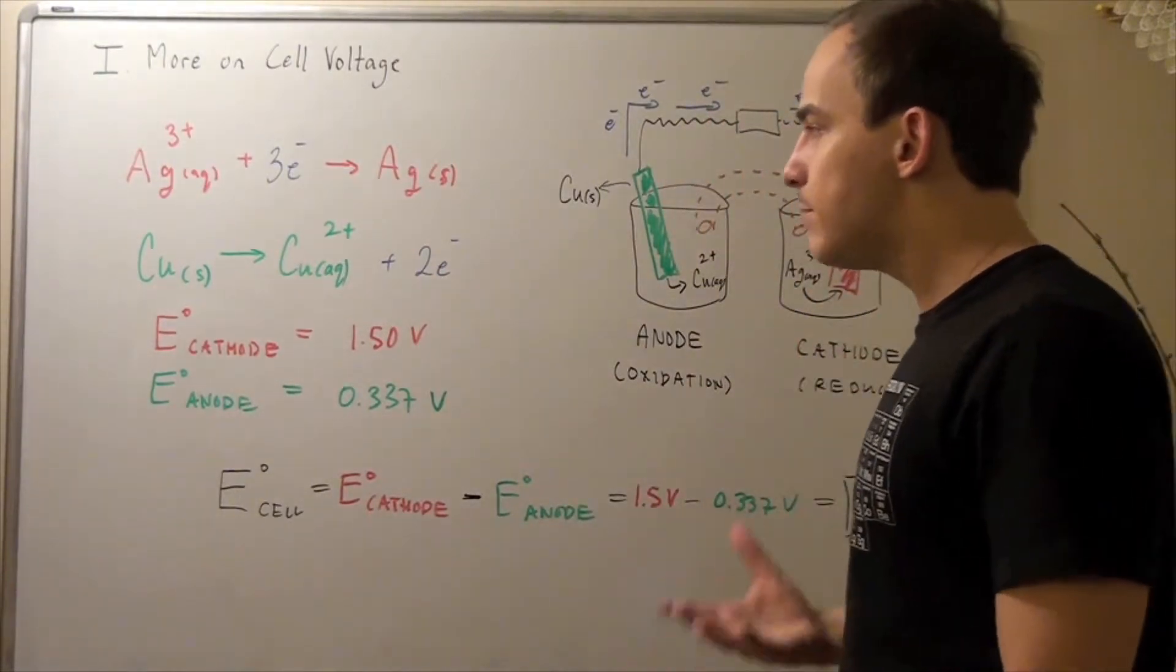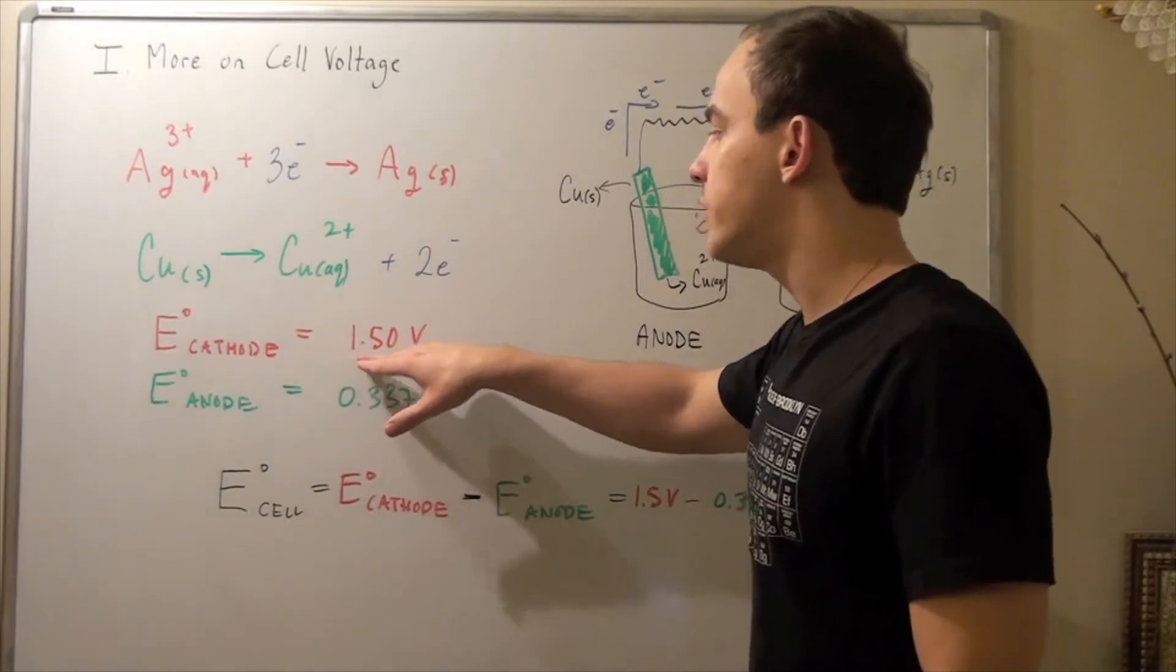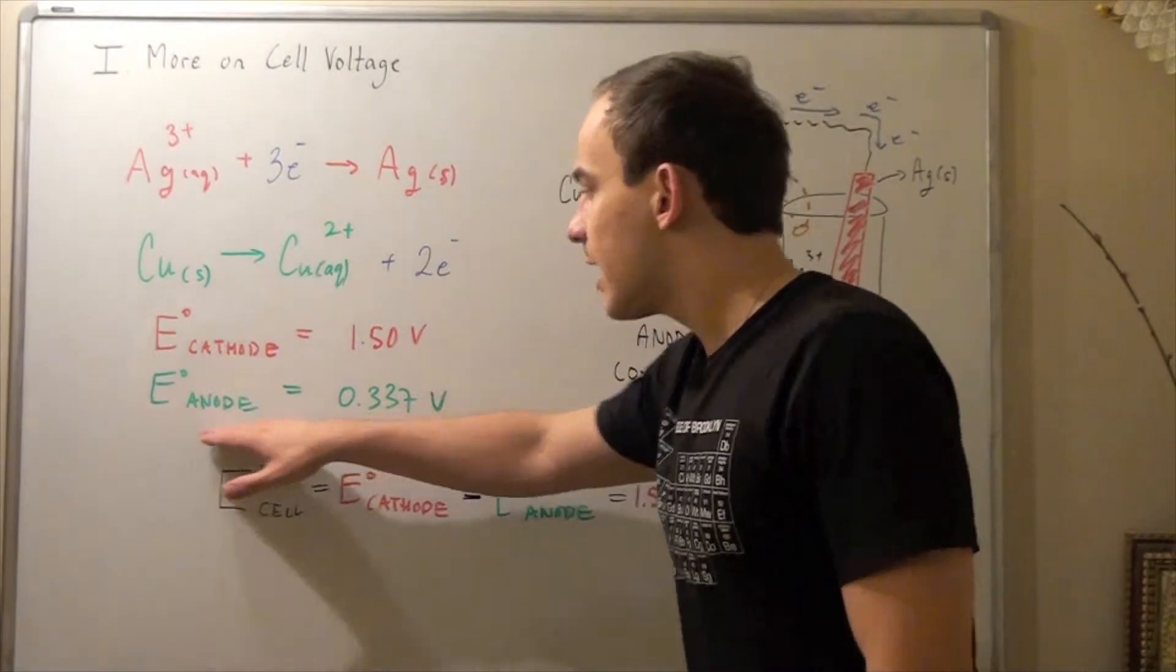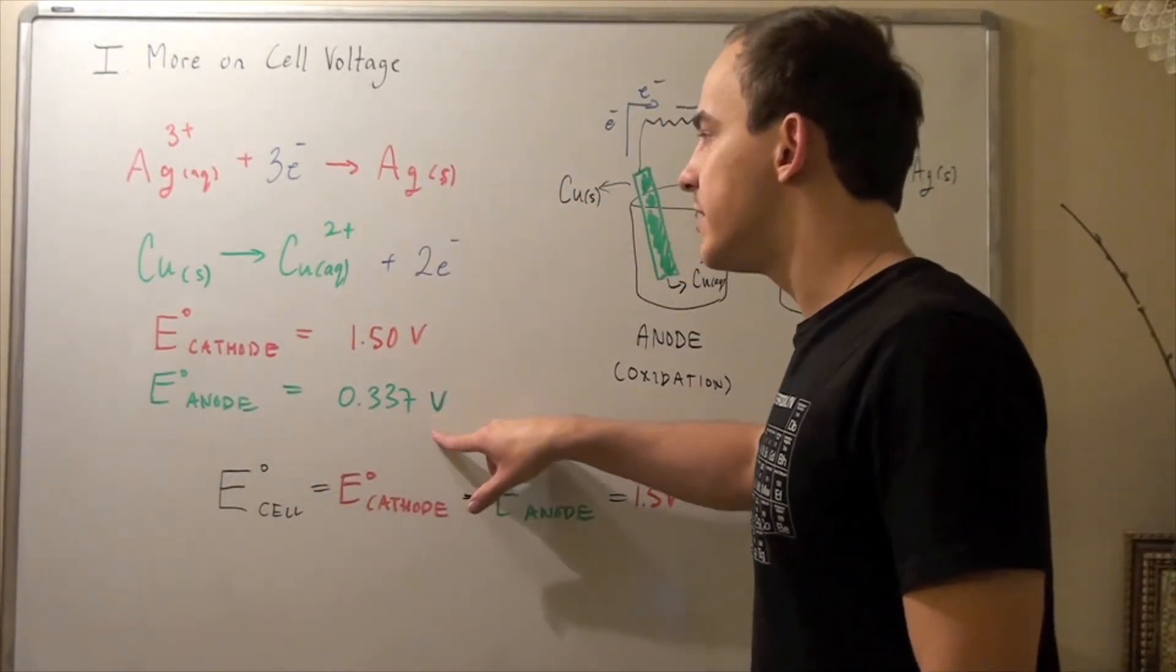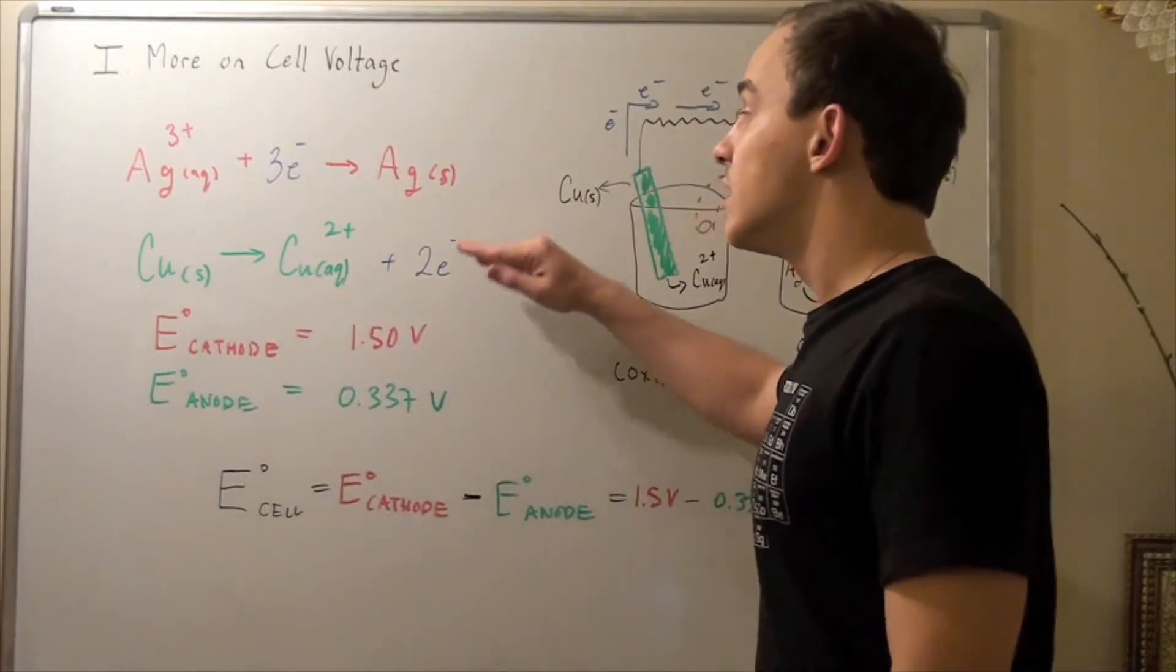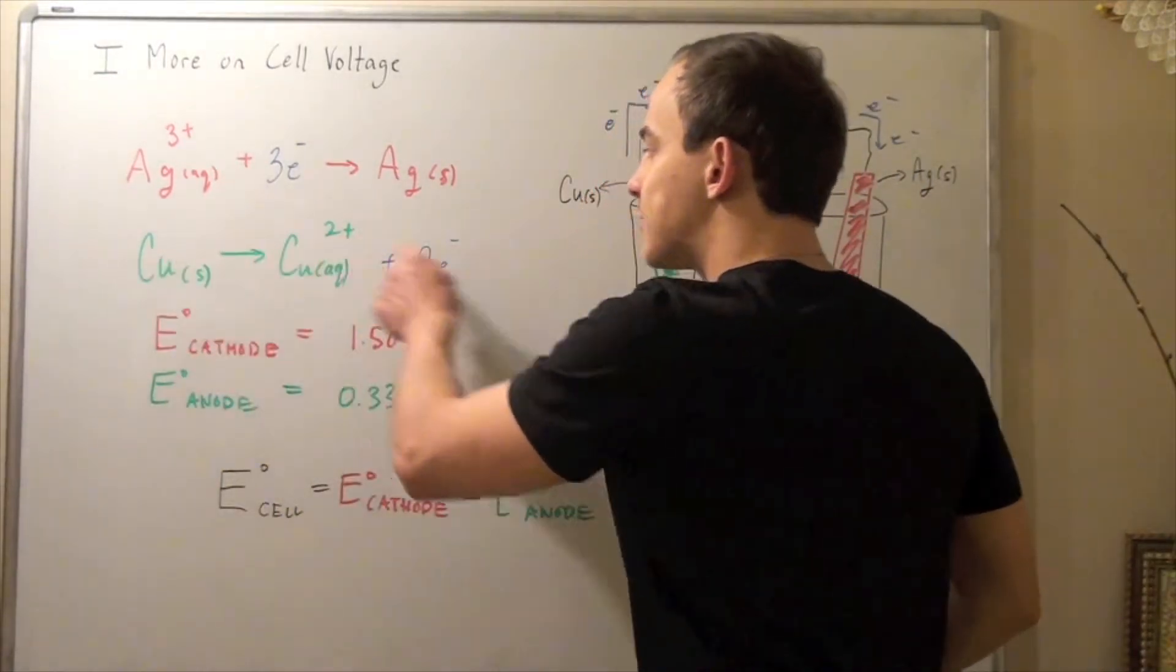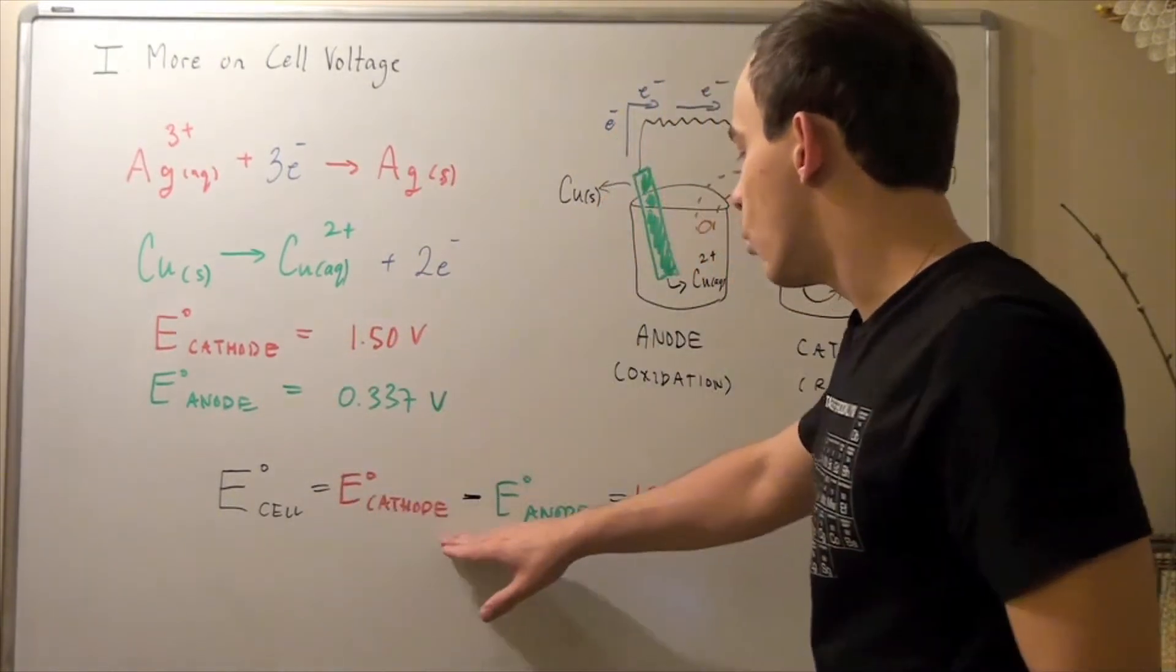According to our table, this reduction equation corresponds to 1.5 volts of voltage potential. Now, this one, on the other hand, corresponds to 0.337 volts. Not the oxidation, the reduction, the reverse of this. So to get this reaction to occur, we simply flip the sign. And that's exactly what we do here.